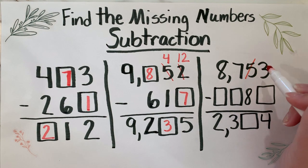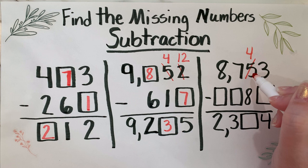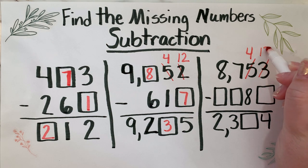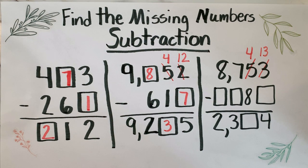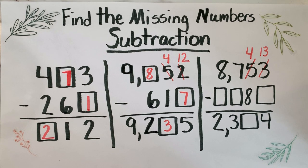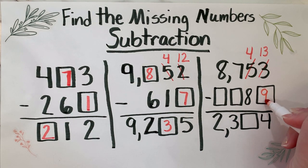So we're going to regroup - take one ten from the tens place, break it apart into ten ones, and give it to the ones place. So ten ones plus three ones is thirteen. Thirteen minus what would give me four? We can start with four and count up, or you could just do thirteen minus four, and thirteen minus four is nine.